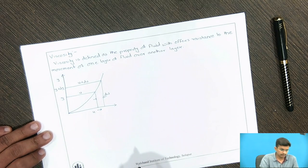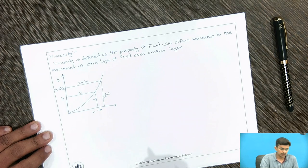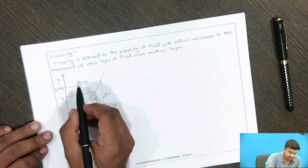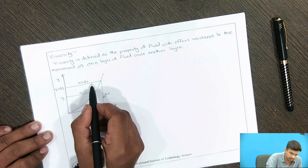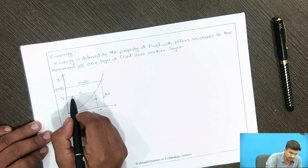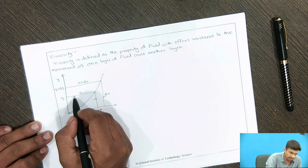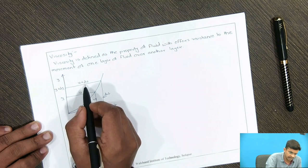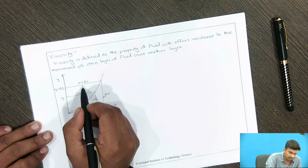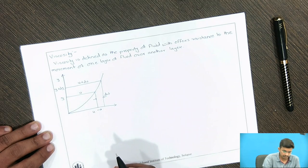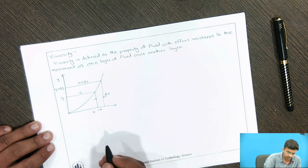When the fluid flows, the top layer causes the shear stress on the adjacent lower layer, and the lower layer causes the shear stress on the adjacent top layer. Now we will see Newton's law of viscosity.